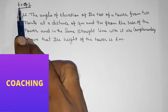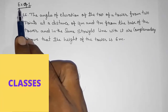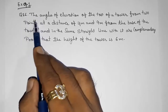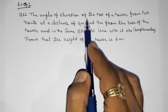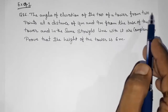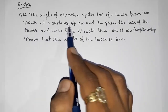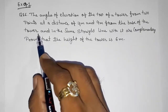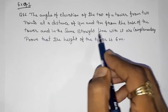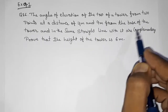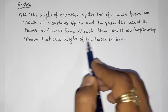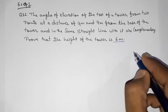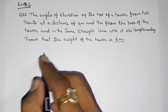Hello friends, today we are going to solve CBSE Class 10th Maths Exercise 9.1 Question Number 16. The angles of elevation of the top of a tower from two points at a distance of 4 meters and 9 meters from the base of the tower, and in the same straight line, are complementary. Prove that the height of the tower is 6 meters.